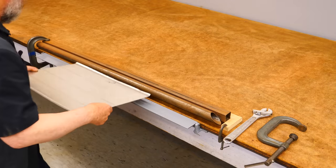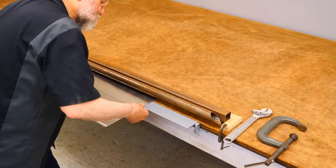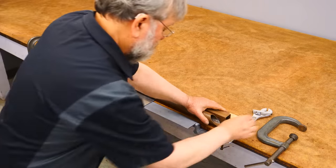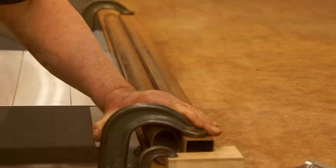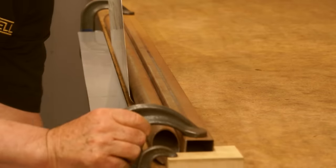The first bend line is aligned with the edge of the apron, and the radius die is clamped into place. The first bend is made.